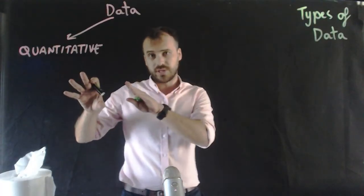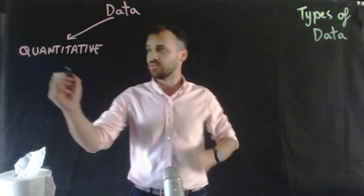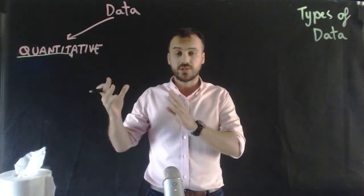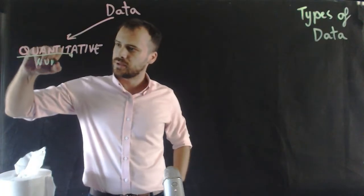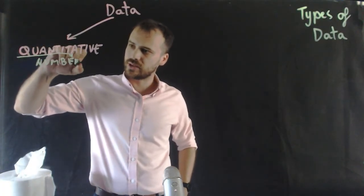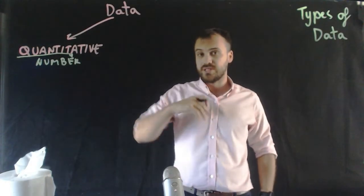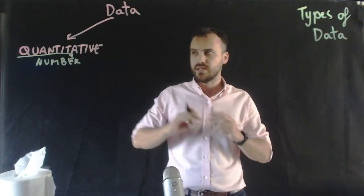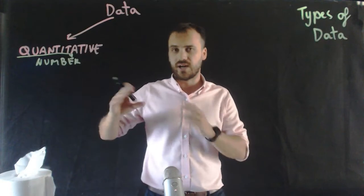So the first type of data we've got is quantitative. Now quantitative, like quantity, quantitative quantity like a number. So any kind of data that you can collect which is number data like someone's age or their height or their weight, that's quantitative data, number data.